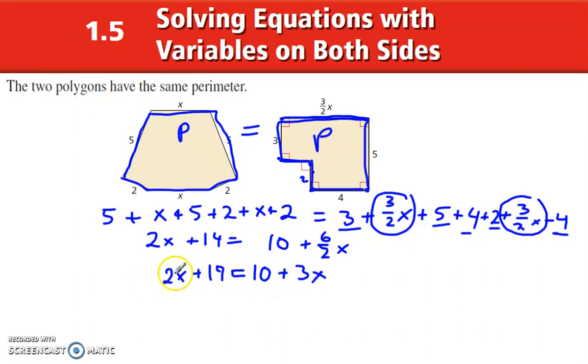I have a variable term on each side, so I am going to subtract the smaller one, minus 2x. Since I am canceling out the variable on this side, I am going to cancel out the constant on this side, so minus 10 there, minus 10 here. And that gives me 4 equals 1x. So x is 4.